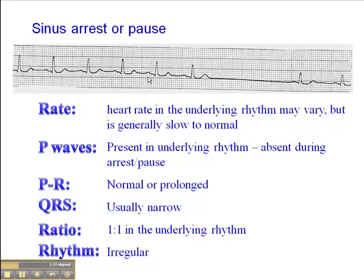Remember, this is sick sinus syndrome — we have disease of the SA node. In this case, we have a pretty regular underlying rhythm, and the heart rate is actually pretty normal. Here we have a QRS that falls on a dark line, and calculating the heart rate gives us approximately 85 beats per minute — so that's pretty good.